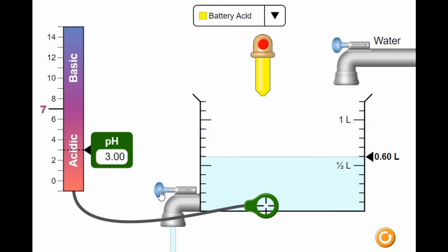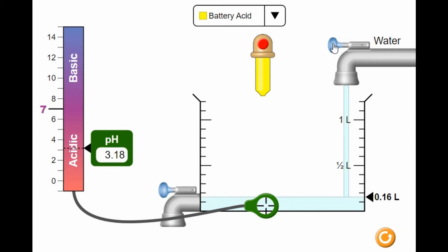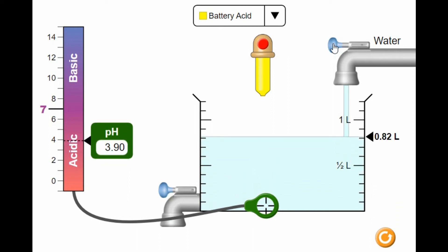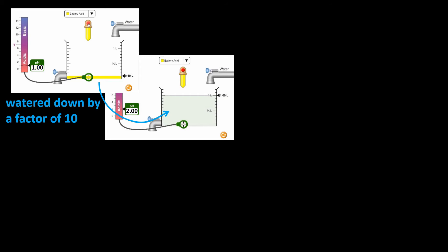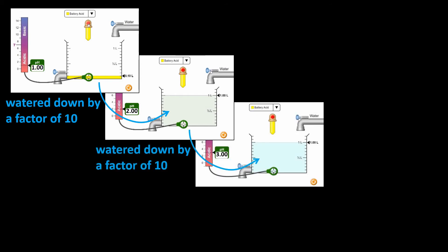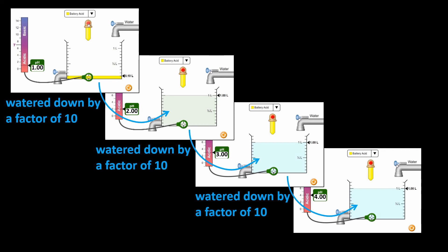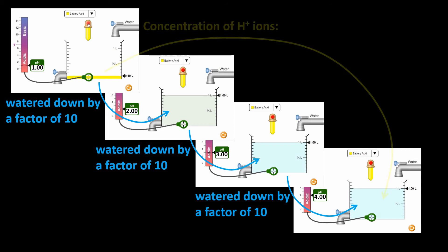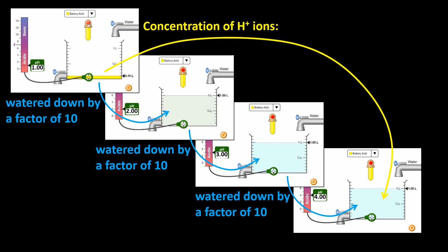If I now drain the heavily watered-down battery acid again and water it down again by a factor of 10, the pH rises to 4. So I started with an acid with a pH of 1, watered it down by a factor of 10, then by a factor of 10 again, then by a factor of 10 again. The concentration of H+ ions in the final solution was one-one-thousandth of the original, and the pH changed from 1 to 4.